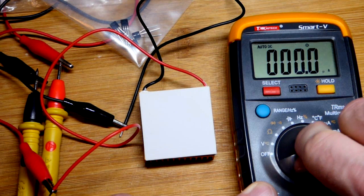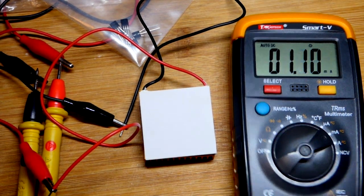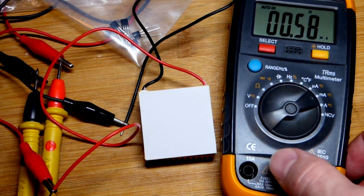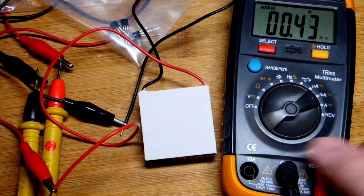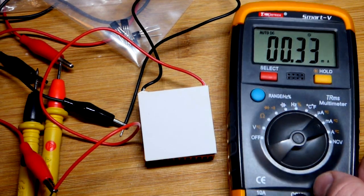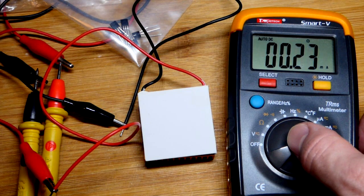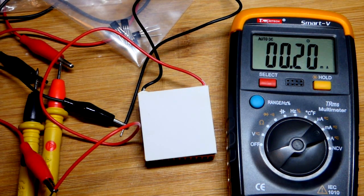Now let's go and measure current. Some meters you might have to move the probe, but this one, everything but high current, the red probe stays there. So we got milliamps. You can see there is some current there. There is a temperature difference still between the two sides.